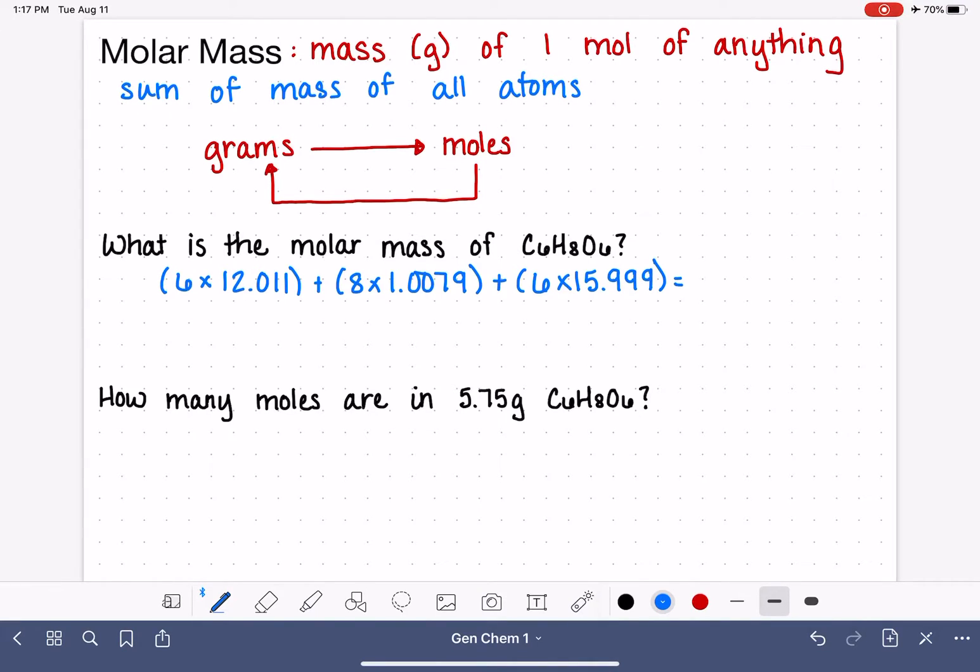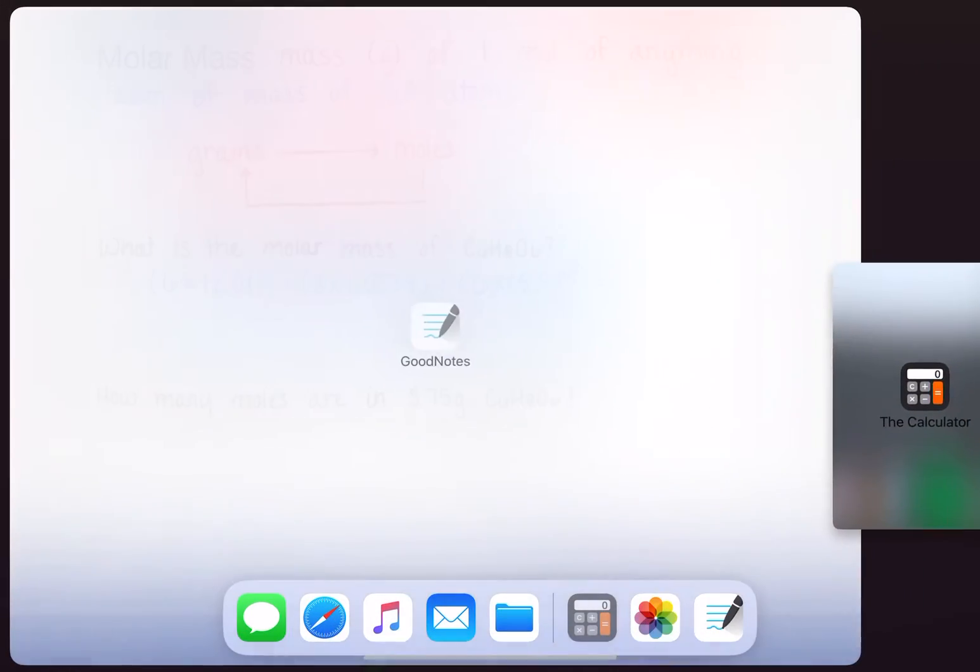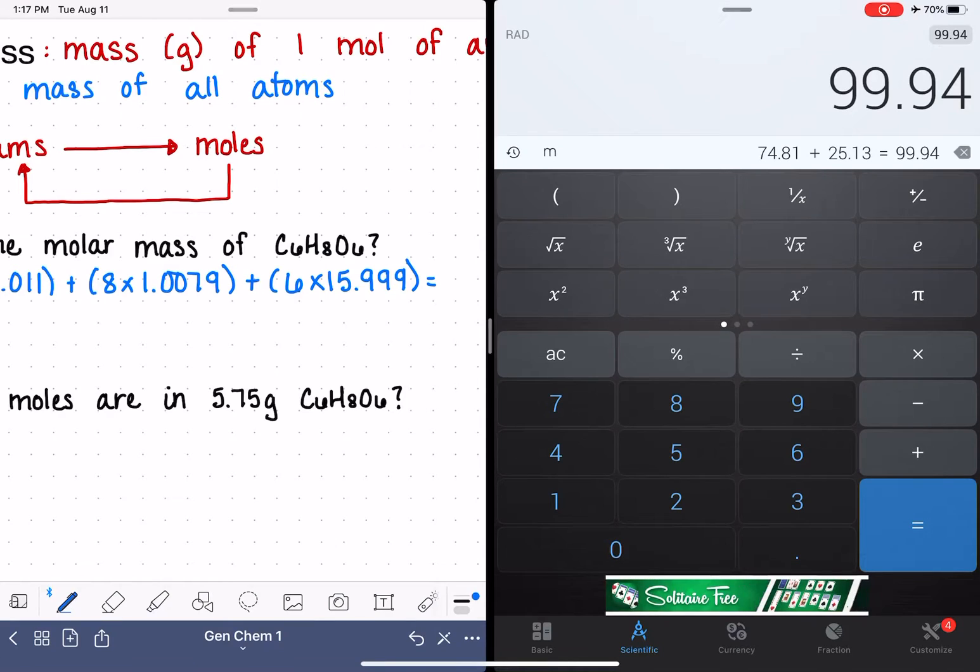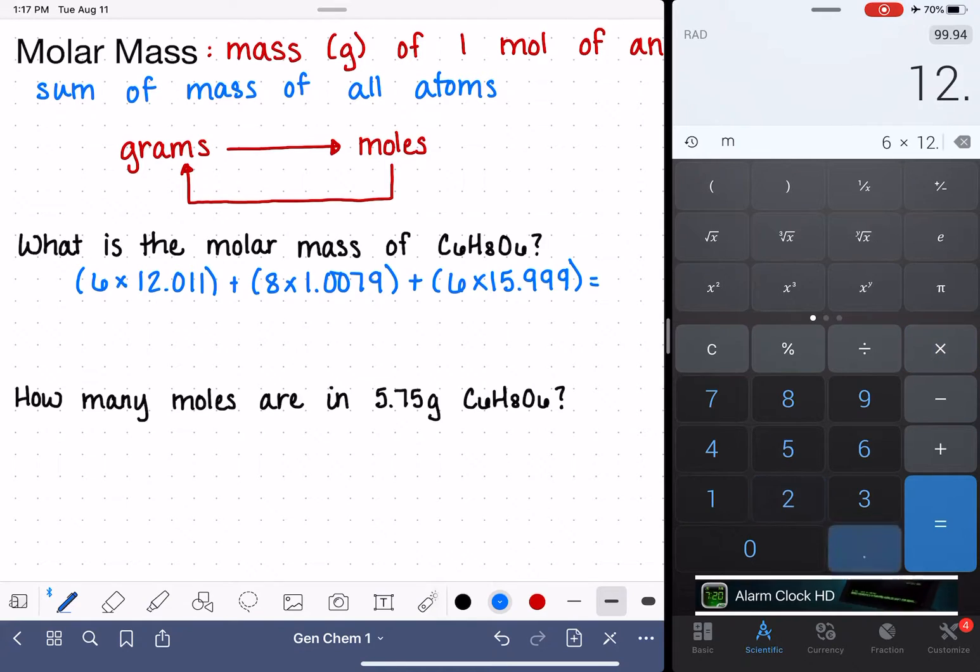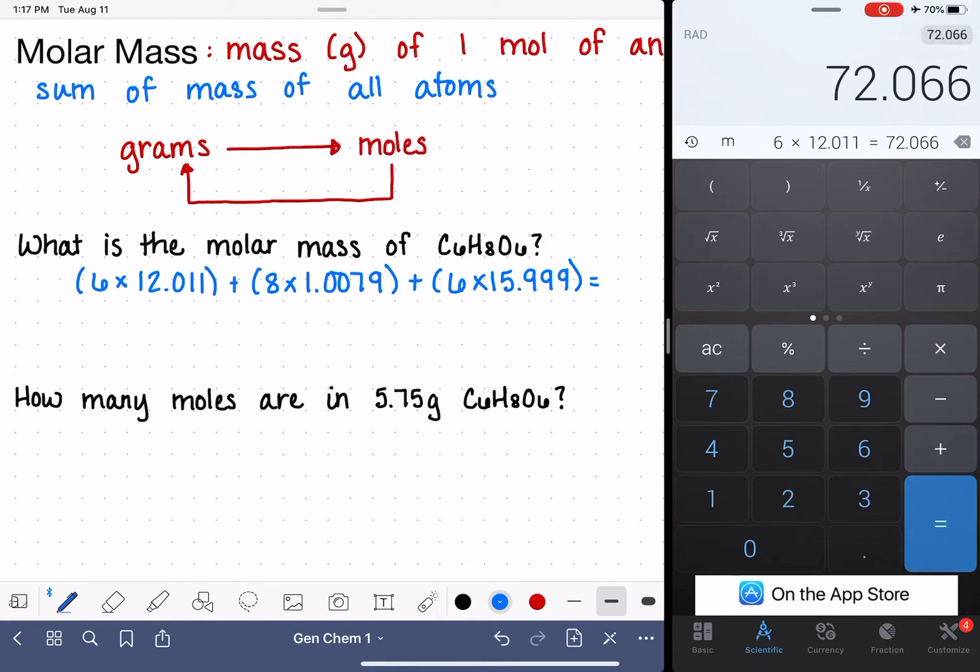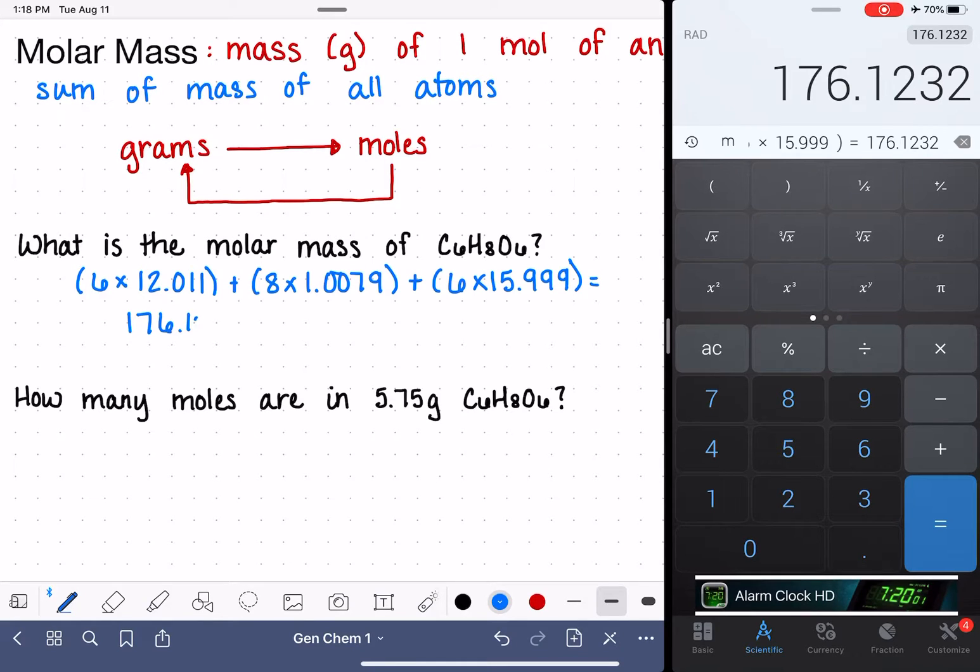We're going to add all of these numbers up together, and that's going to give us the molar mass for vitamin C, C6H8O6. So 6 times 12.011 plus 8 times 1.0079 plus 6 times 15.999, and our molar mass here is 176.1232.